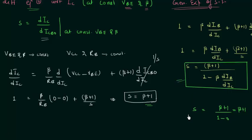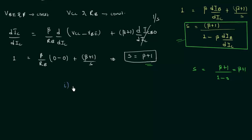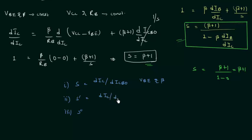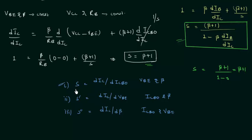We can use the general equation to calculate the stability factor of any biasing scheme. Recall from the last presentation we had three stability factors: S, S', and S''. S equals the small change in collector current with respect to reverse saturation current ICBO at constant VBE and β. S' equals the small change in IC with respect to VBE at constant ICBO and β. S'' equals the small change in IC with respect to β at constant ICBO and VBE. The first one, S, is the most important and generally the one you deal with.